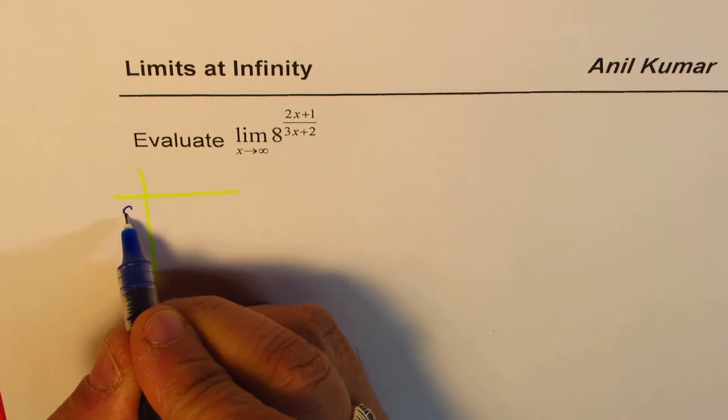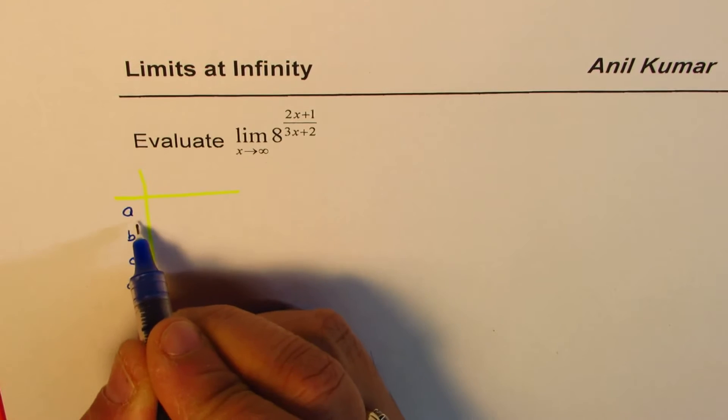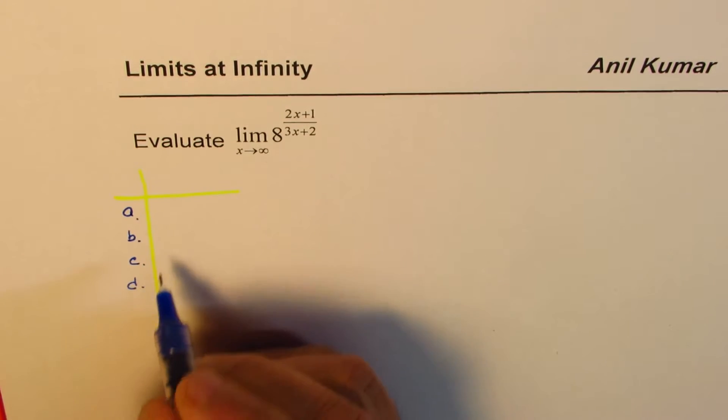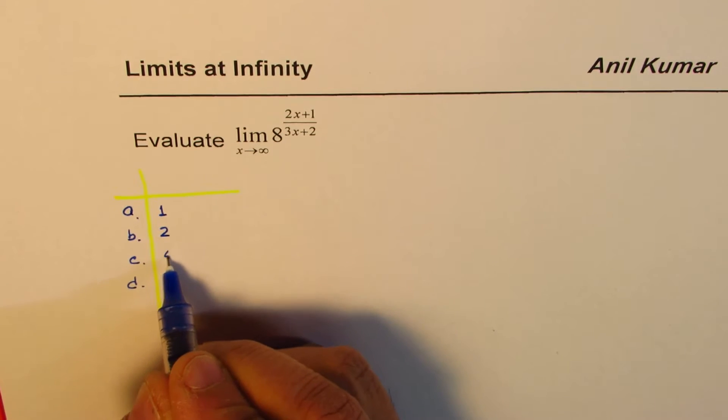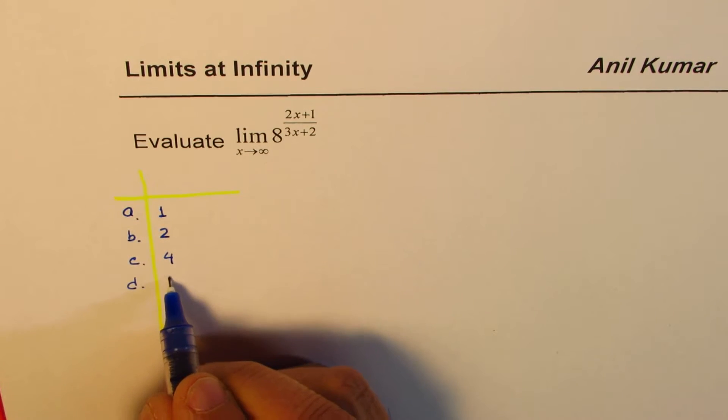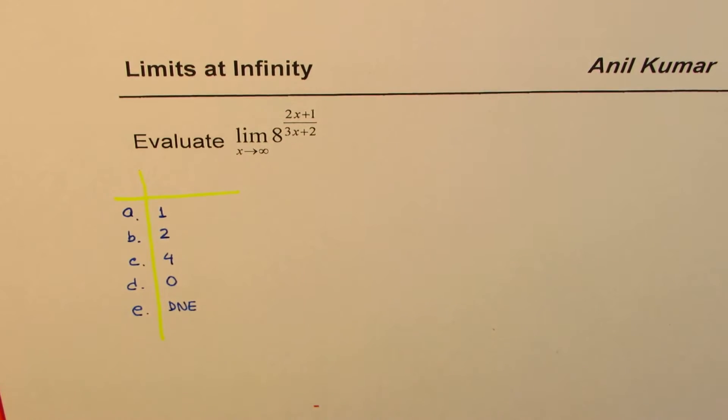So let me say that the options for the answers are A, B, C, D. Let's say these are four options. It could be 1, it could be 2, it could be 4, or it may be 0. And let me say E: does not exist. So one of these options is definitely correct. So you can work it out and let me know.